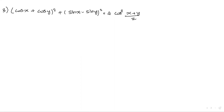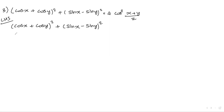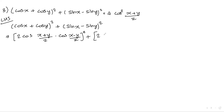Third question: (cos x plus cos y) whole square plus (sin x minus sin y) whole square. LHS is (cos x plus cos y) whole square plus (sin x minus sin y) whole square. Applying formula: cos x plus cos y equals 2 cos of (x plus y divided by 2) into cos of (x minus y divided by 2), whole square, plus (sin x minus sin y) whole square.